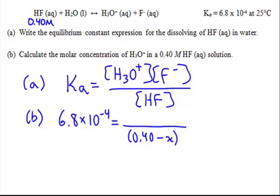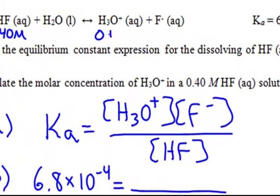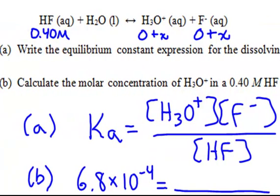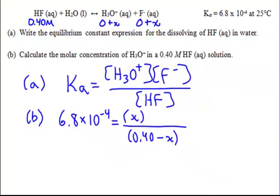Your products start at 0 and are going to be adding X. For every 1 mole we lose of HF, we gain a mole of H3O+ and a mole of F-. So both products are just gaining X. Keep in mind the dissociation is so very little that X is so small — the 0.40 minus X is still pretty much 0.40 — so we can simplify and drop the X in the denominator.